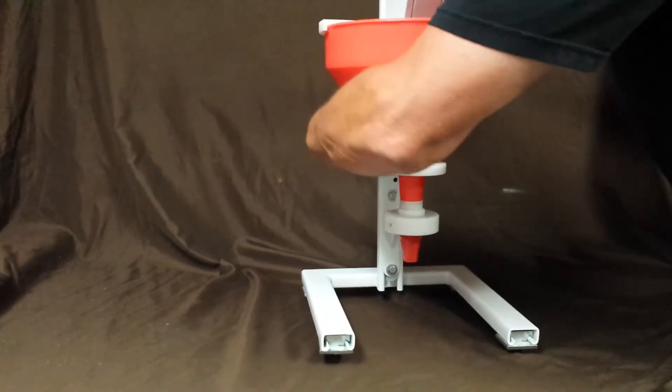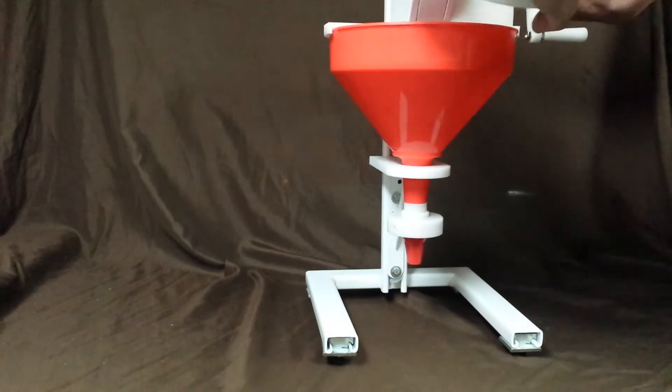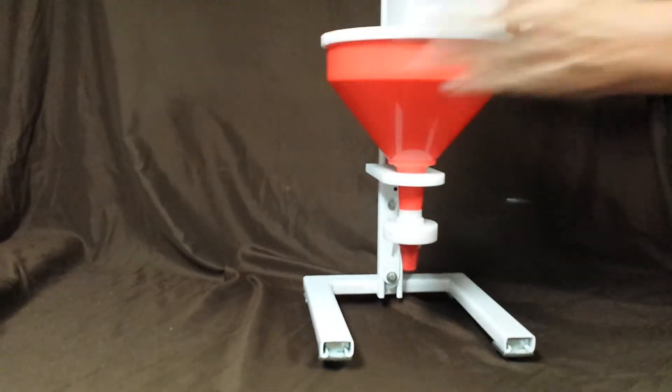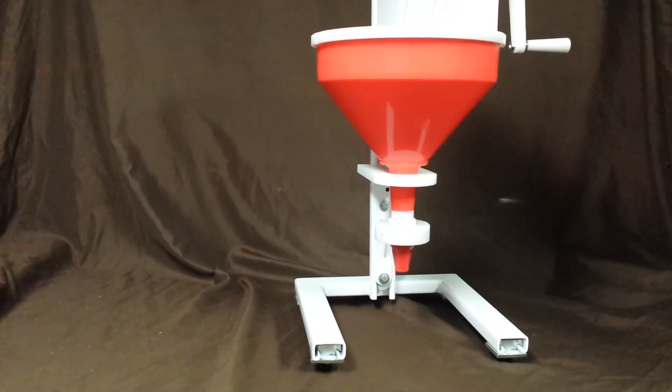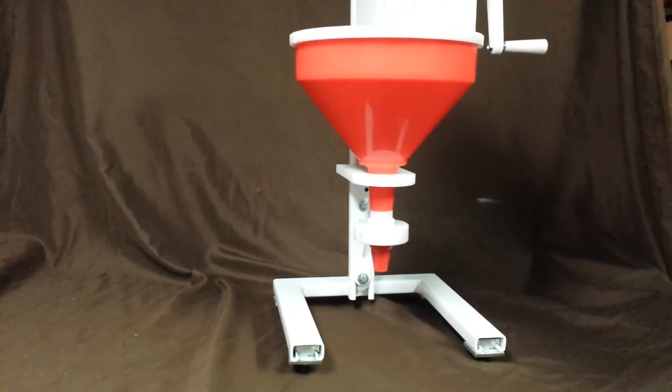And then you just pick the machine back up, set the lid back in place, and now you're ready for flour, non-free-flowing products such as flour.